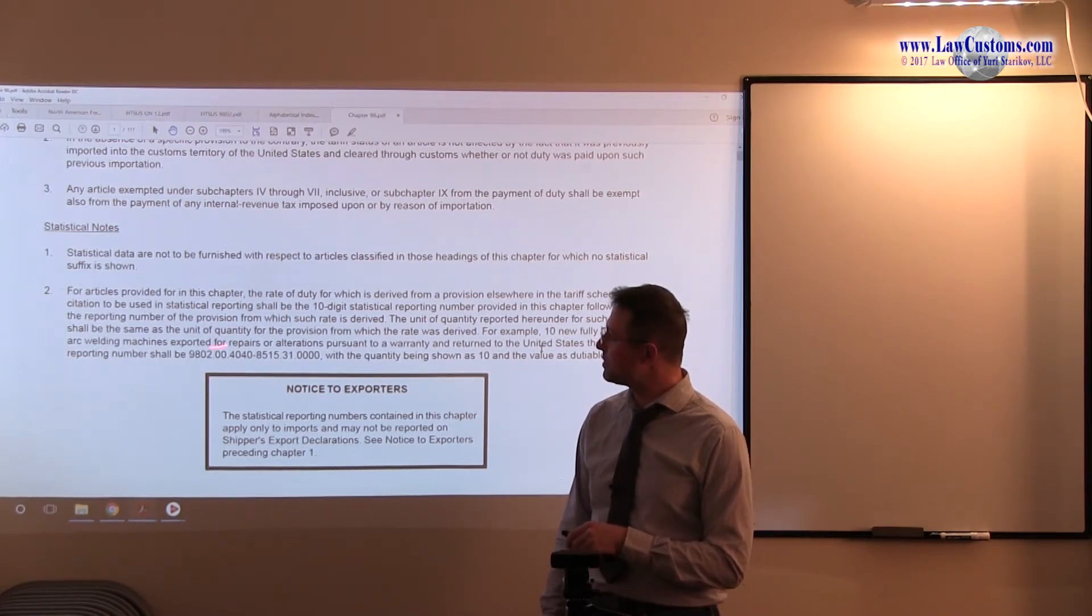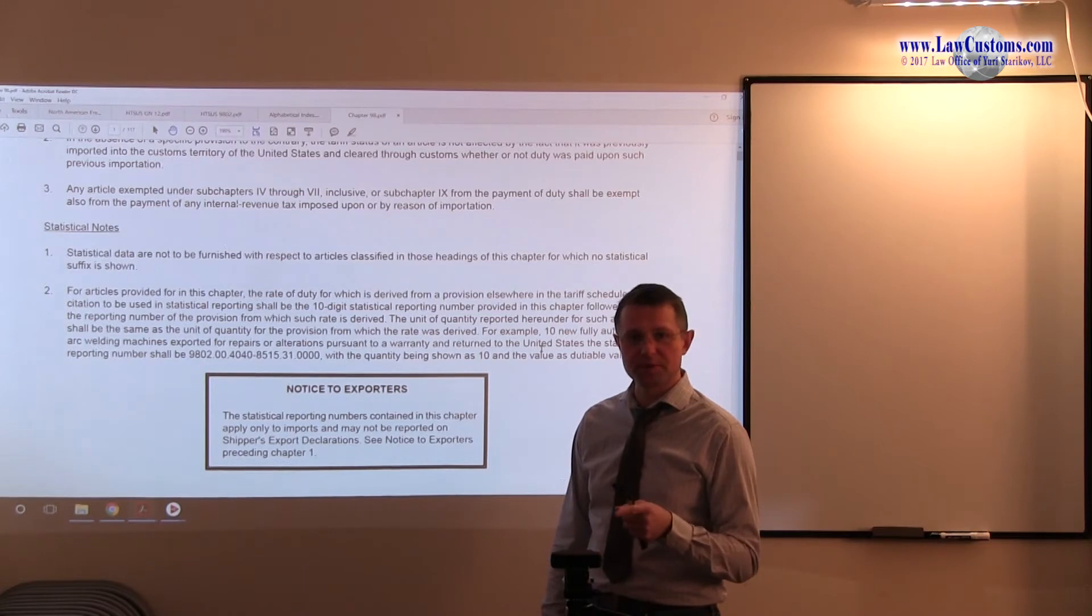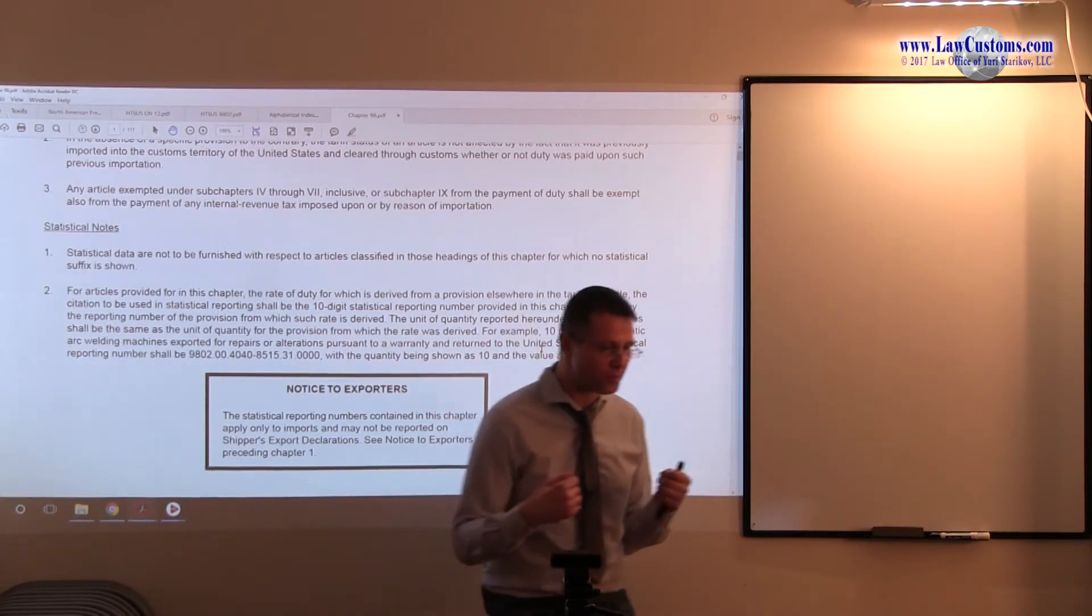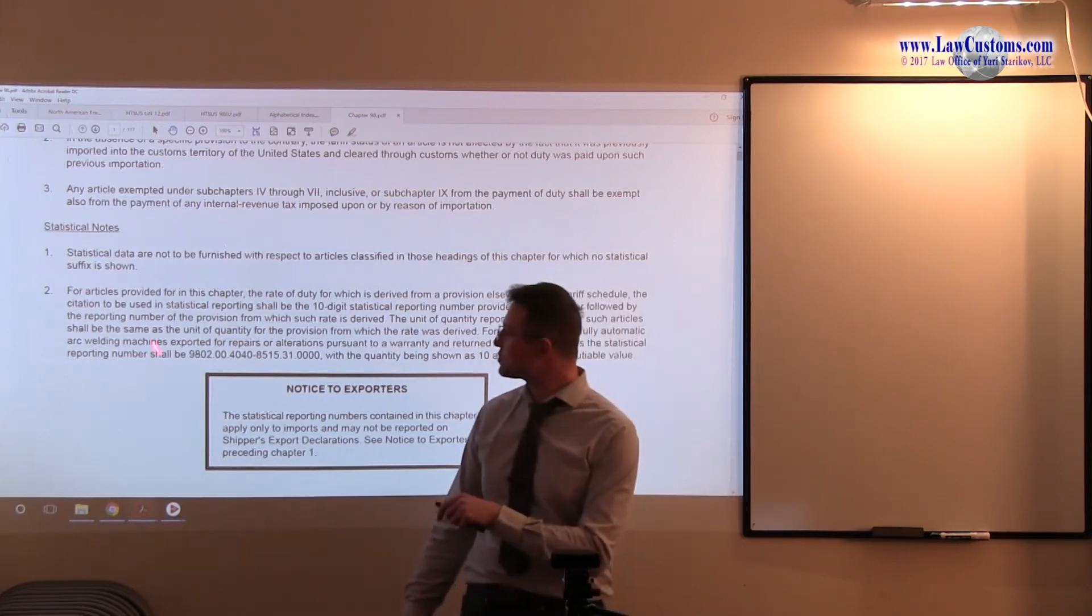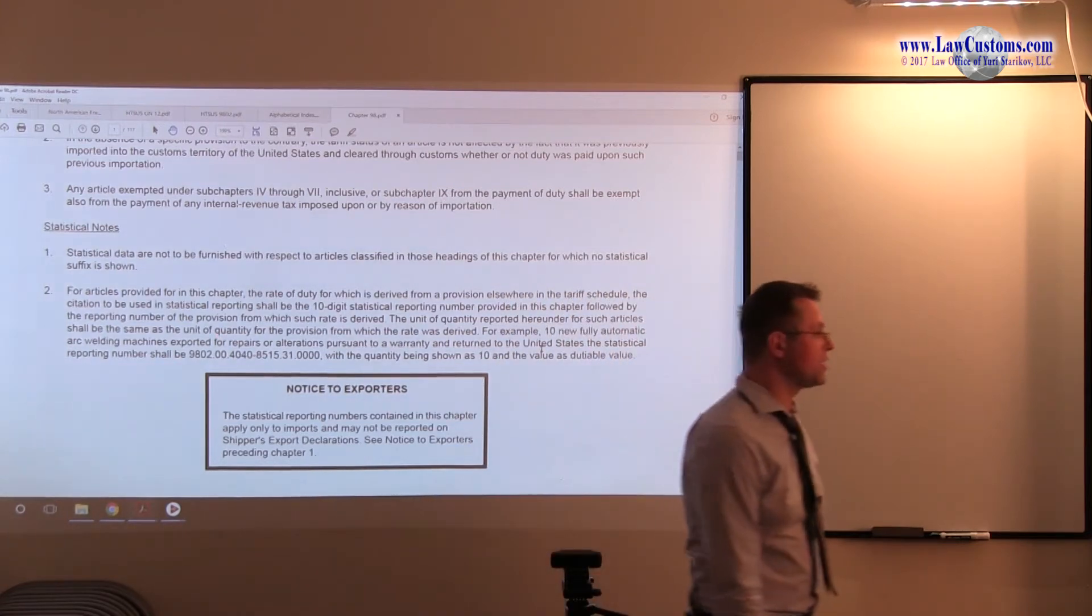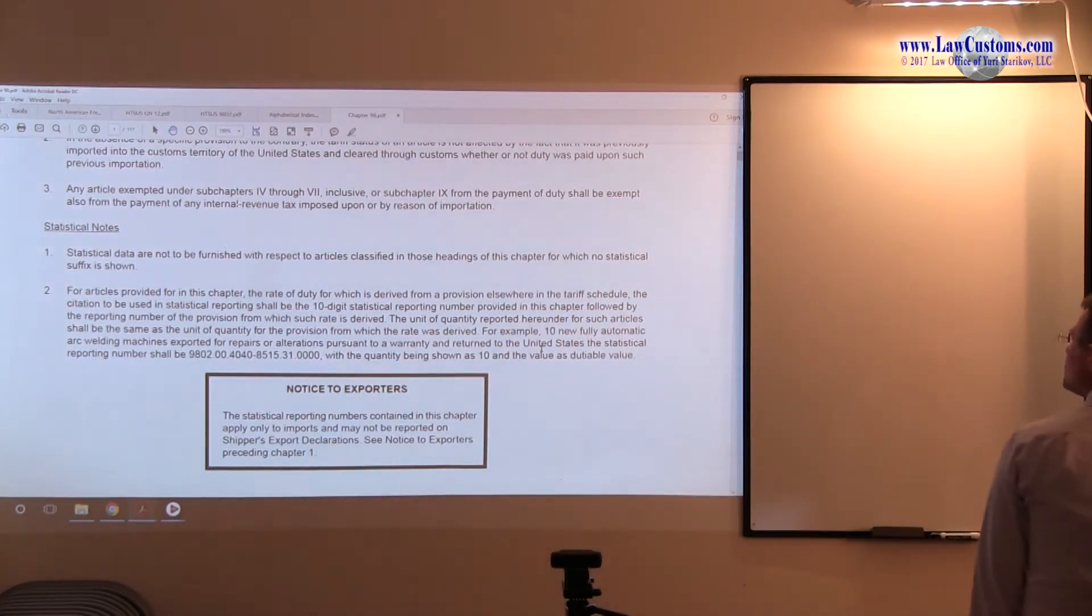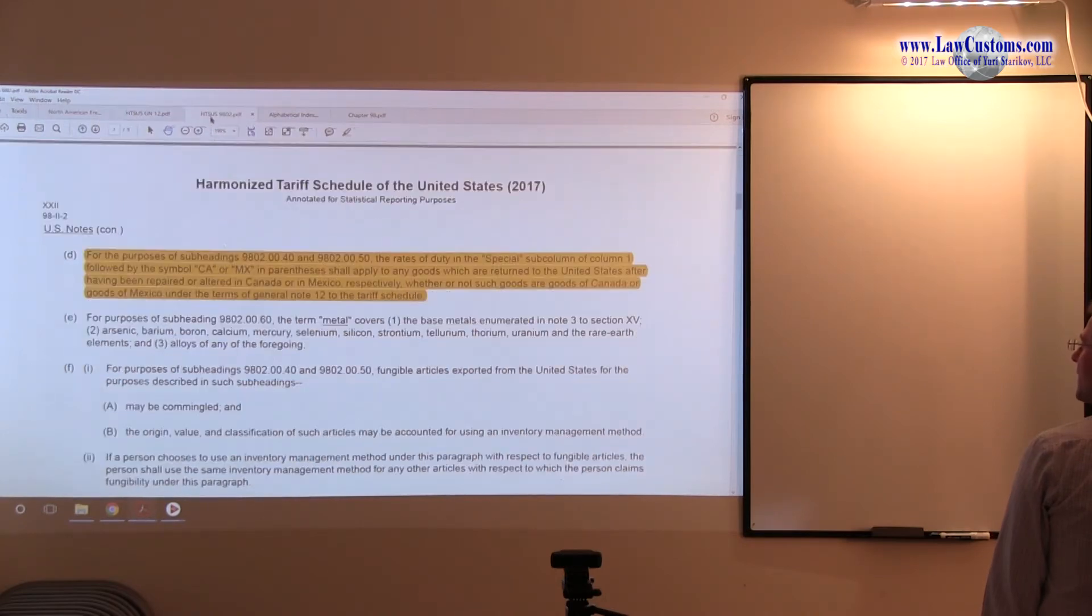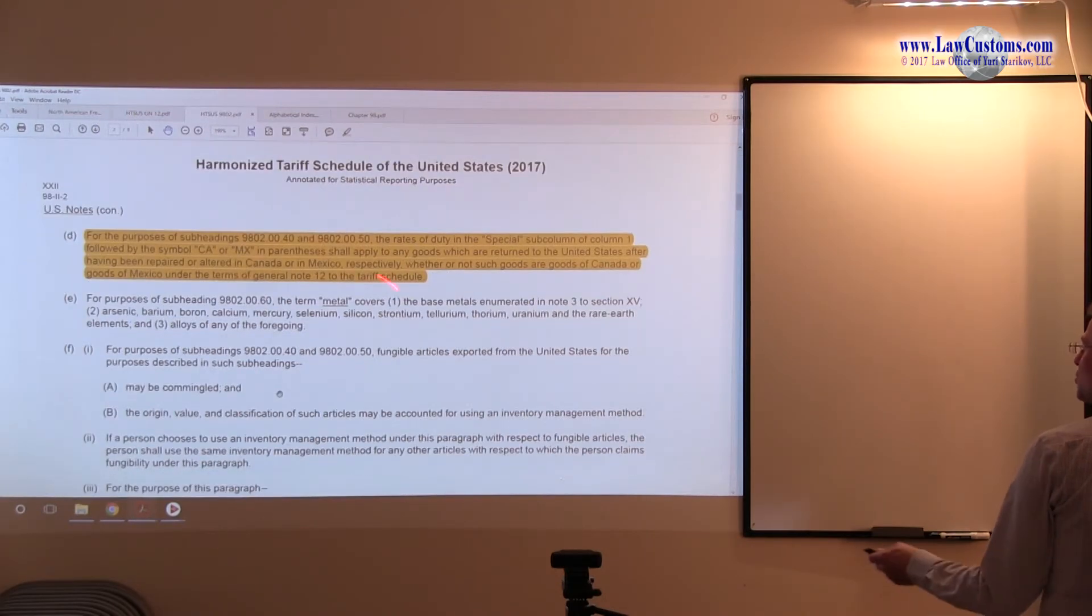And this one would be the number providing for the goods which was repaired or altered. And for this one, you will place MX or Canada, Mexico or Canada symbol. And for this one, you would place the country of origin. So really, there is no getting away from the country of origin per se. But for the purposes of this particular HTSUS number, you can disregard the general note 12.